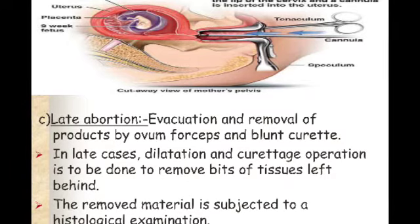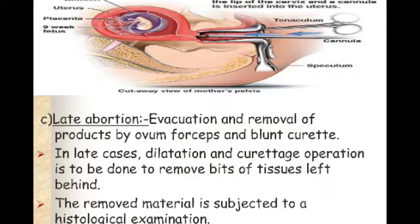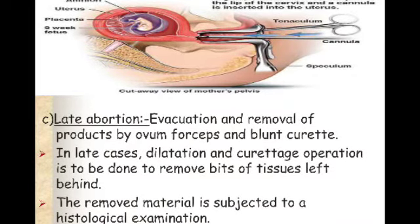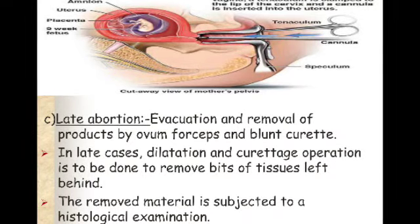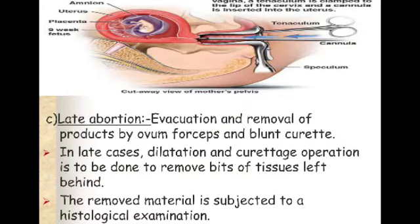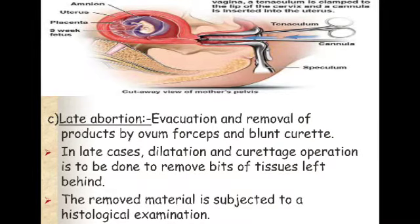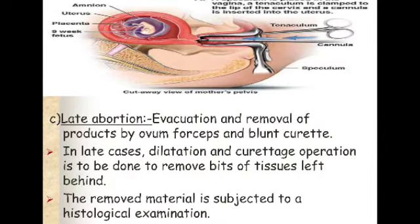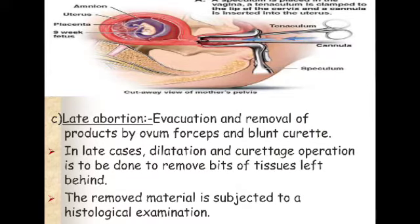In late abortion, evacuation and removal of products is done by ovum forceps and blunt curette. In late cases, dilation and curettage (D&C) operation is performed to remove bits of tissue left behind.